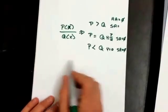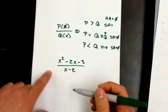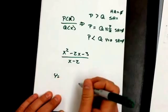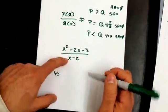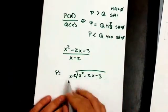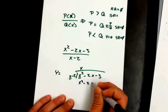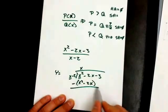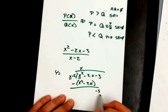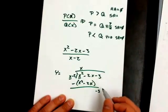Let's look at the slant asymptote. If this degree is higher than this degree, I'm going to have a slant asymptote. The way that I find it is I say Y equals whatever happens when I divide the numerator by the denominator. I'm going to use long division. X squared divided by X gives X, multiply times both terms, which gives X squared minus 2X. I subtract both — those cancel. Bring down the next term, which is negative 3. I can't divide that, so this is the remainder.